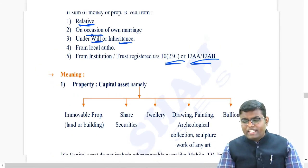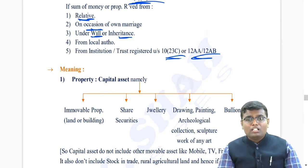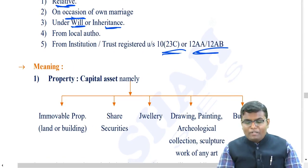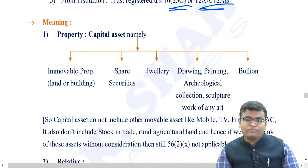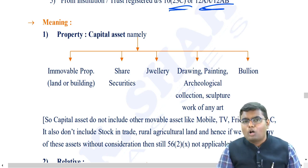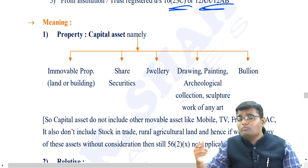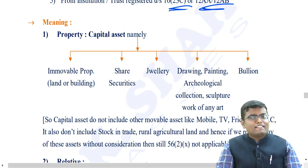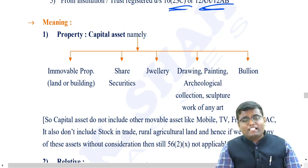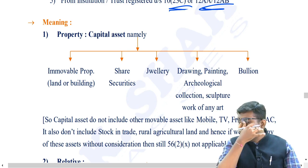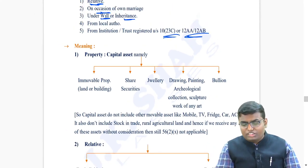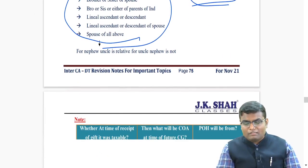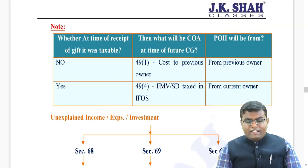One more point: movable and immovable property are taxable, but what is the meaning of the word 'property' here? Property means a capital asset - namely immovable property, shares, securities, jewelry, drawings, paintings, sculptures, work of any art, and bullion (gold biscuit kind of thing). Whatever is not called a 'property' under this definition - even if received from a non-relative for crores and crores of rupees - is never taxable. For example: rural agricultural land in India, stock in trade, or movable assets like car, fridge, AC, TV, mobile phone - these are not capital assets as per the definition and hence never taxable.